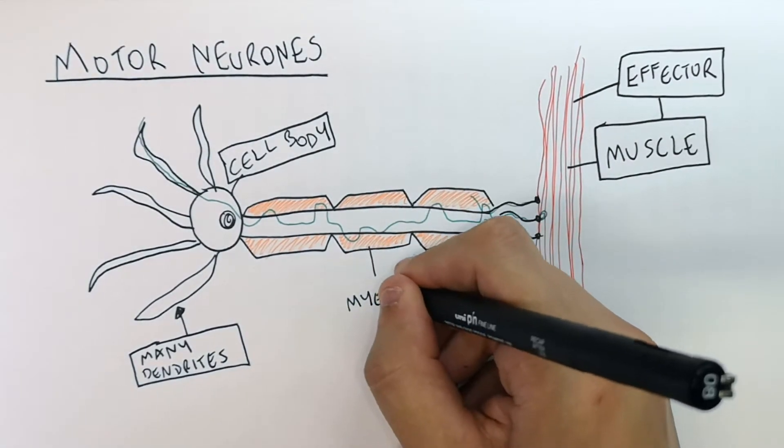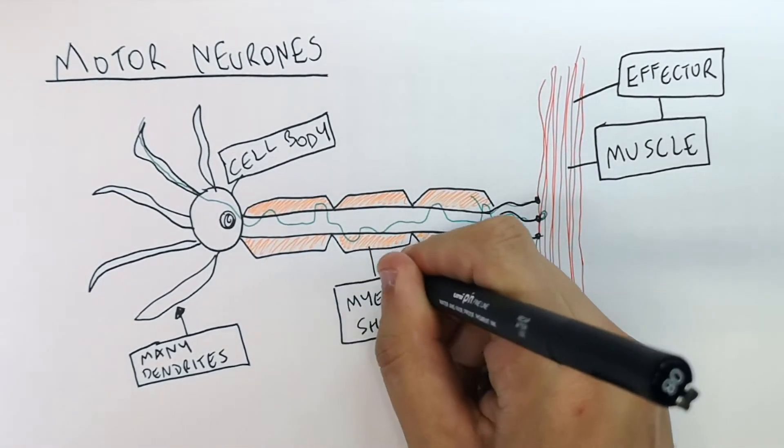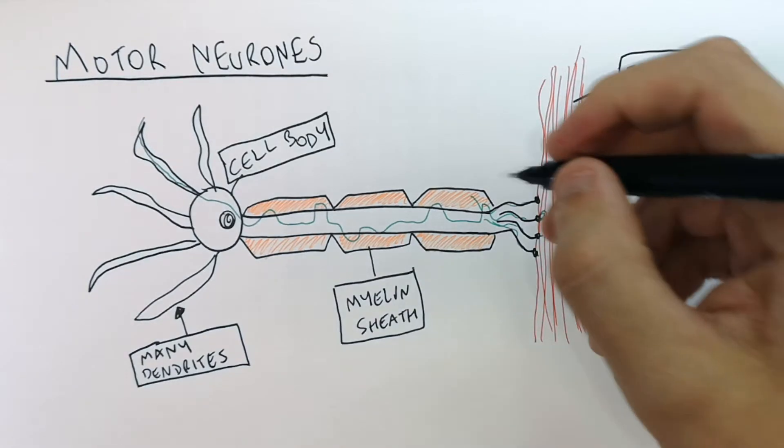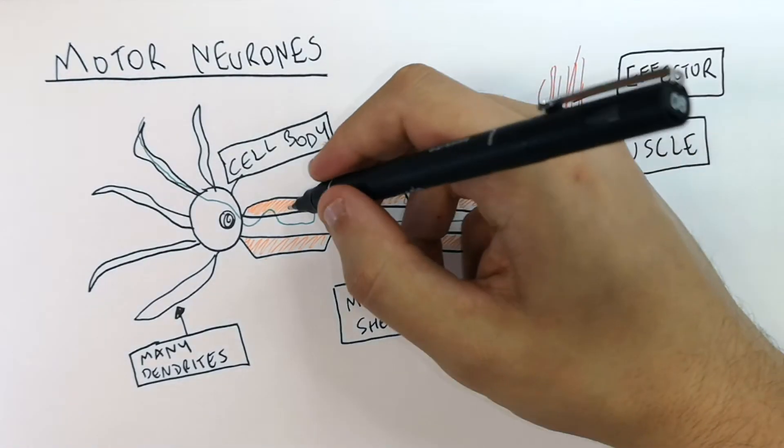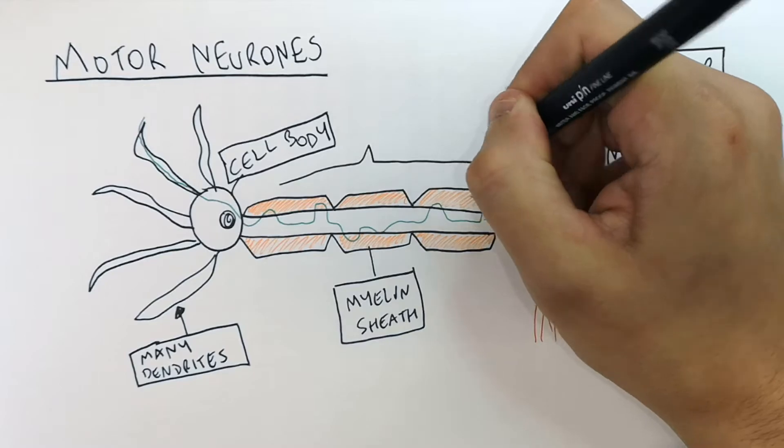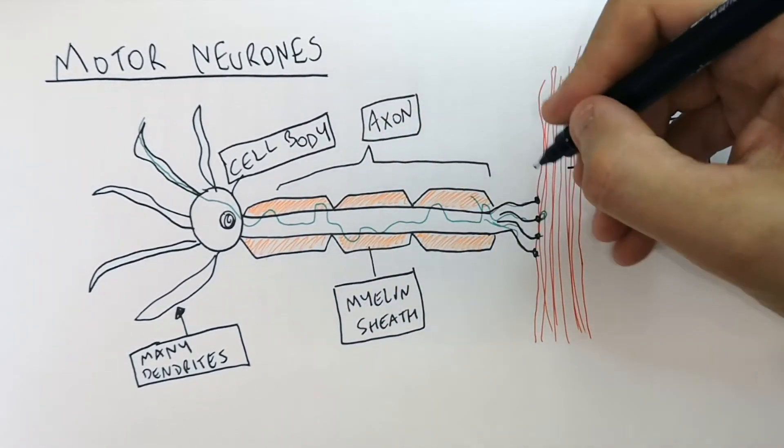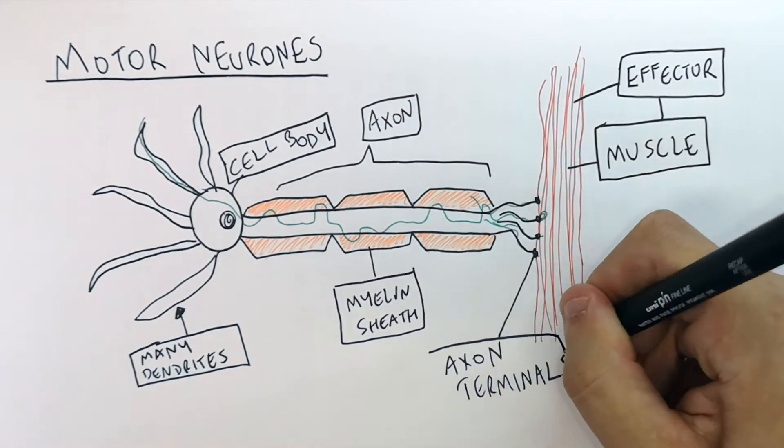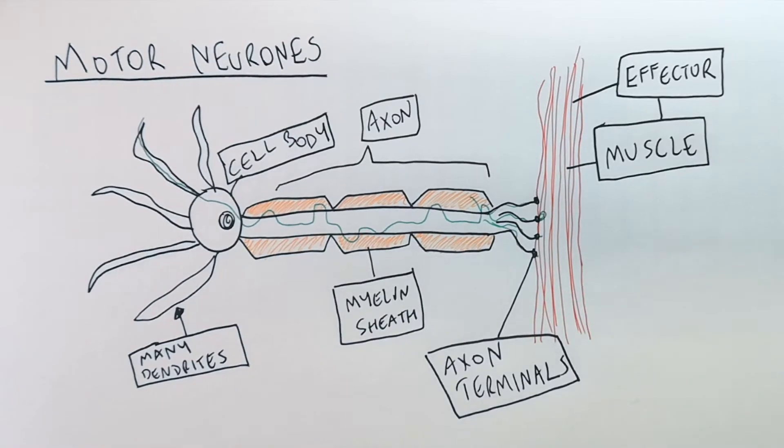So this here is the myelin sheath. Remember, the myelin sheath insulates the neuron. It's a fatty layer. This here is the axon, and these are the axon terminals that connect to the effector from the axon.